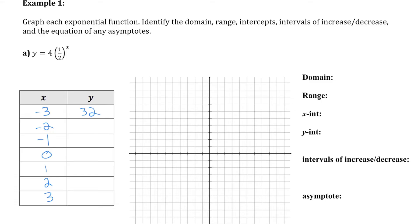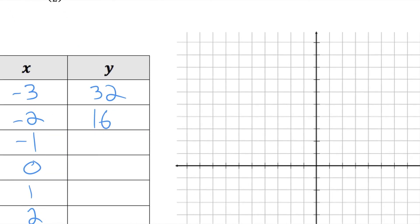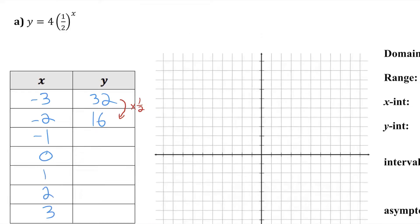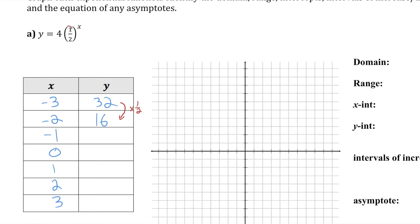If I plugged in negative two, I'd have four times a half to the negative two, which is the same as four times two squared, which is 16. What I want you to notice is to get from my first y value to my second y value, it was cut in half. And why did that happen? Well, that's because the base of the power is a half.